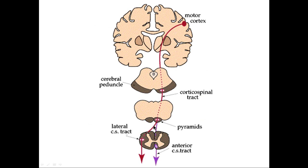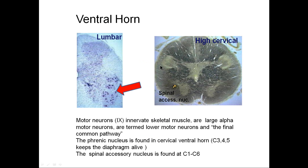Here's the corticospinal tract coming down and terminating in the anterior horn cells. These are anterior horn cells or alpha motor neurons. They reside in the ventral horn of the spinal cord gray. Here's the gray matter of the spinal cord and the central canal. This is a high cervical cross section, and the ventral horn is in this region — these are the cells that receive input from the corticospinal tract.